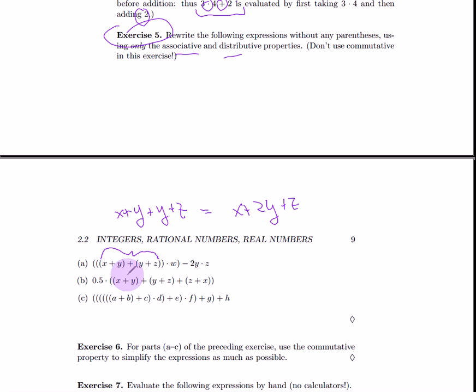And we know that that's the same thing as x plus 2y plus z. Alright. So, we can replace everything inside this parenthesis here with x plus 2y plus z. Alright. So, and then you go on from there. You simplify from there. Alright. Make sure you only use associative and distributive. You're not allowed to use commutative at this point. Okay. That's exercise 5.